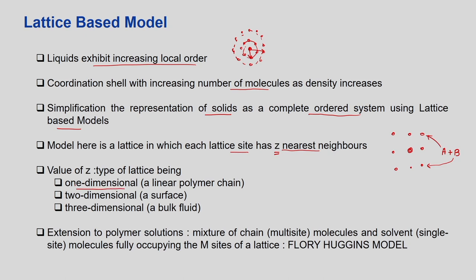If you have a one-dimensional lattice it means a linear polymer chain. A polymer P of chain length C has, say, 4 monomers, so C equals 4 and P equals 1. This one-dimensional representation of a linear polymer chain is the simplest example. Likewise, a 2-dimensional lattice is a surface (x and y coordinates), and 3-dimensional is a bulk fluid. We will address the radial distribution function later; for now let us focus on the lattice-based model.